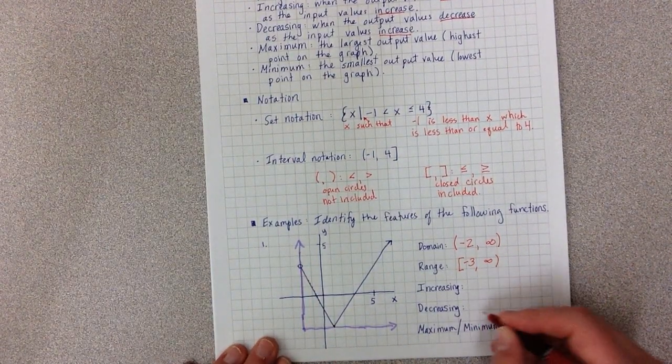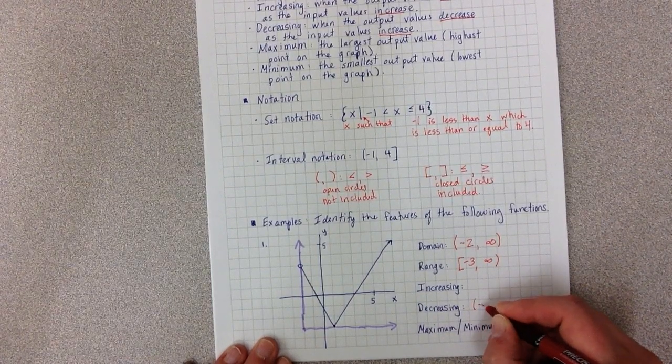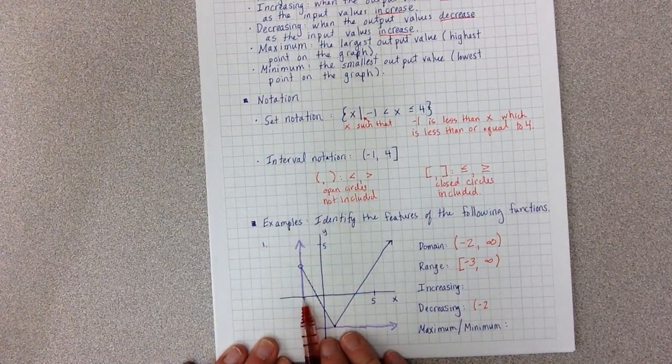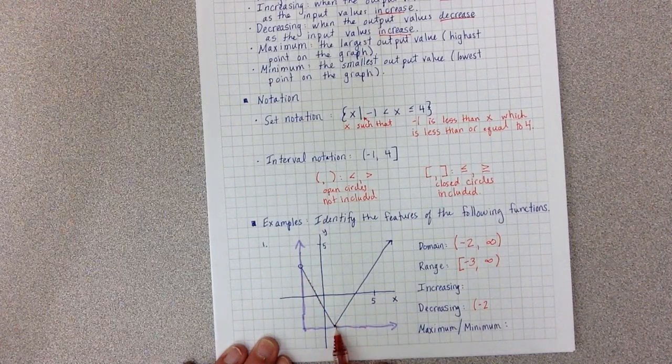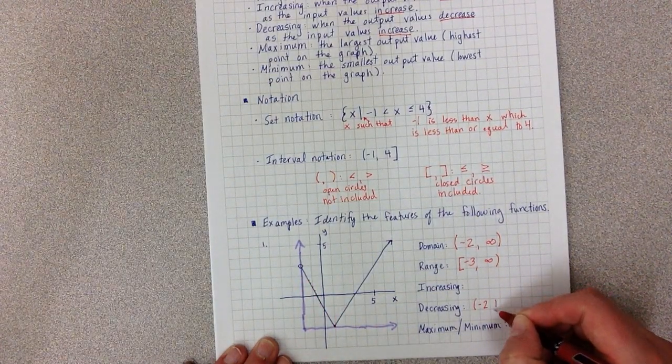So I'm going to be decreasing, starting at x value negative 2. And I stop decreasing at x value 1.